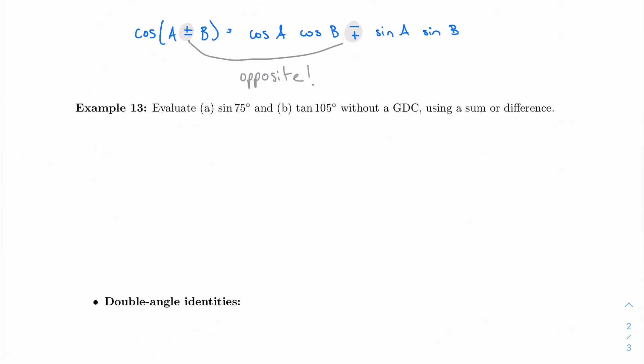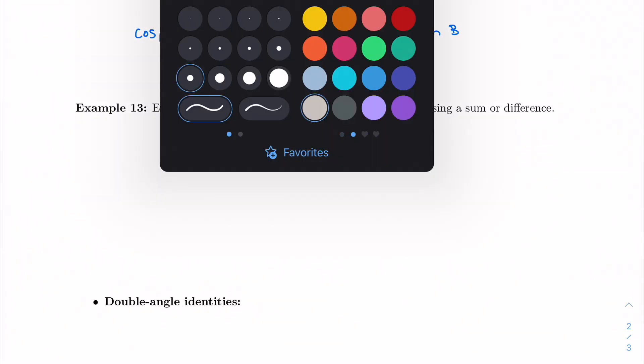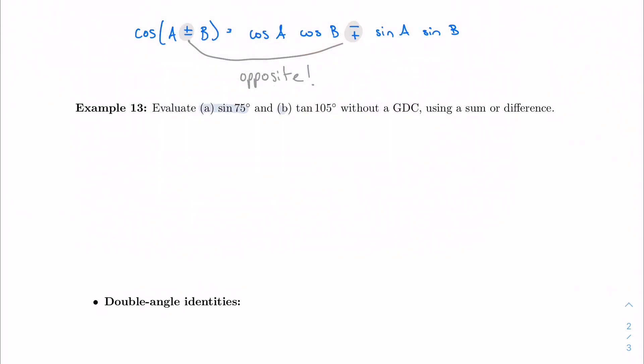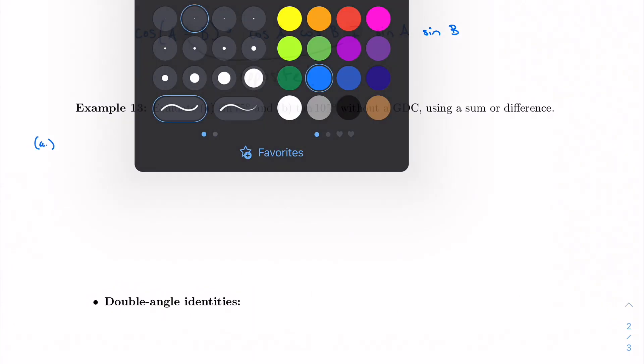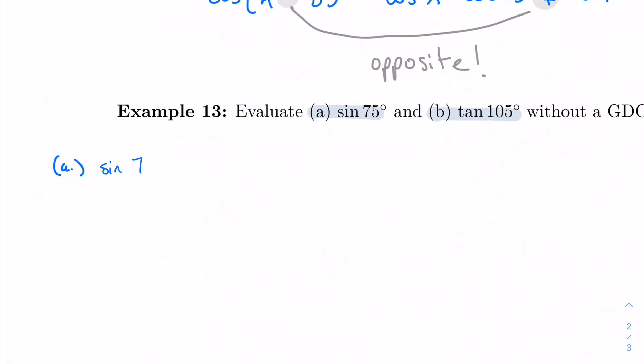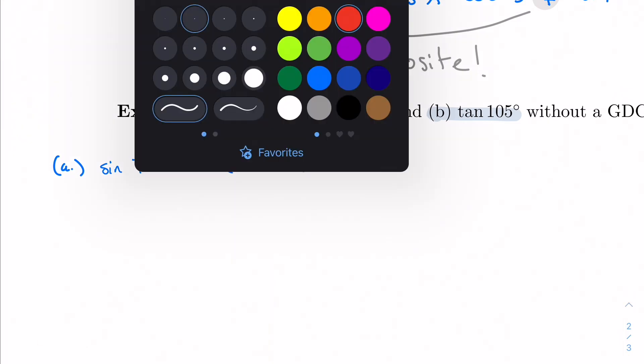I want to find sine of 75 and tangent of 105 without a GDC. So sine of 75, I want to be able to break up 75 degrees into a sum or difference of two values that I should know, two of my kind of important values. And the first one I think of is 30 plus 45. So here's my A and here's my B. And we're just going to apply the formula.